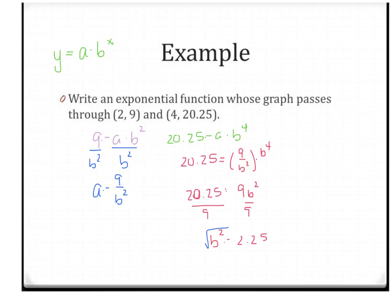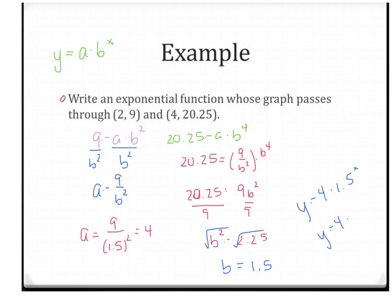Taking the square root of both sides gives b = 1.5. Knowing that b has to be positive, we don't put a plus or minus on that square root. Coming back to solve for a: a = 9/(1.5²) = 9/2.25, which gives a = 4. Putting it together: y = 4·(1.5)^x, or equivalently y = 4·(3/2)^x.